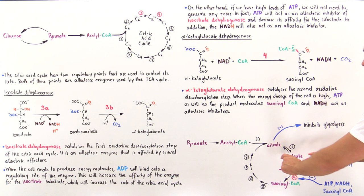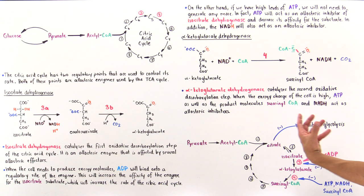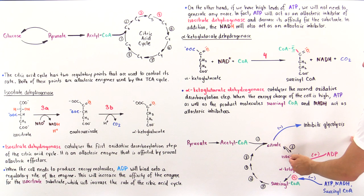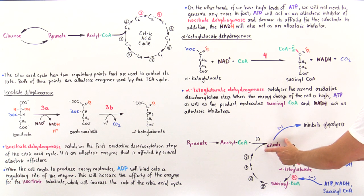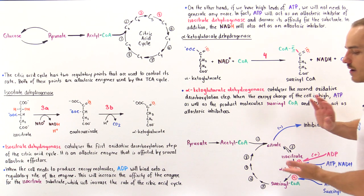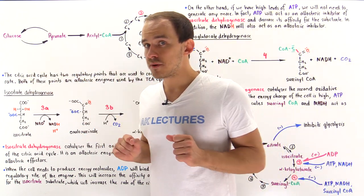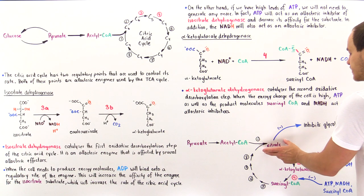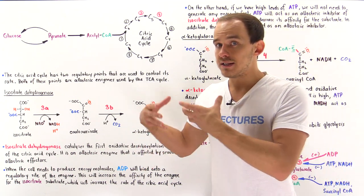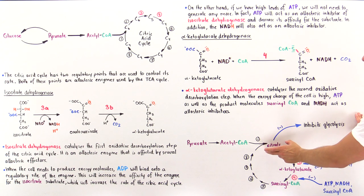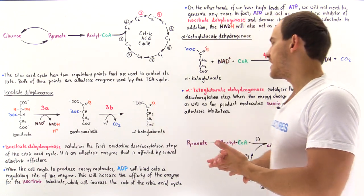When enzyme 3 is turned off, we cannot transform isocitrate to alpha-ketoglutarate, causing a buildup of isocitrate. Since isocitrate is essentially at equilibrium with citrate, there will also be a buildup of the citrate molecule. The citrate moves from the matrix of the mitochondria into the cytoplasm, where it inhibits a specific enzyme in glycolysis, decreasing the rate of glycolysis. The citrate can also be used to form fat molecules, as we'll discuss in a future lecture.